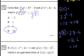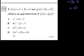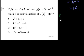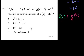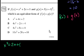Problem 73. If f of x is equal to x squared plus 2x plus 1, and g of x is equal to 3 times x plus 1 squared, which is the equivalent form of f of x plus g of x? They just want us to add these two functions. So f of x is x squared plus 2x plus 1.